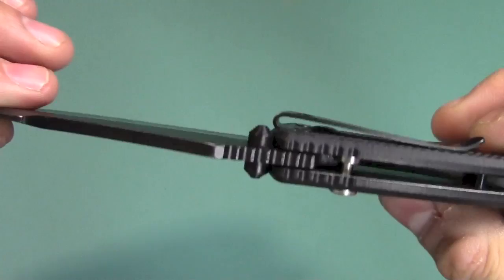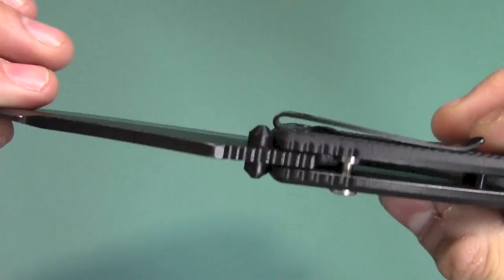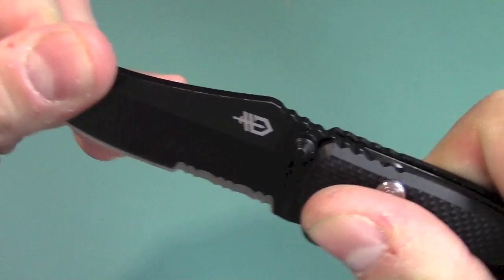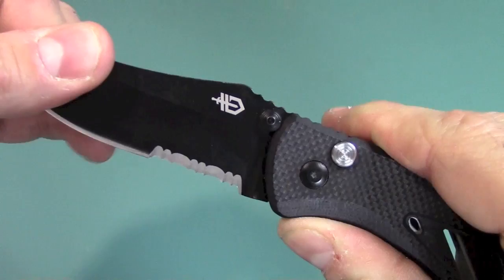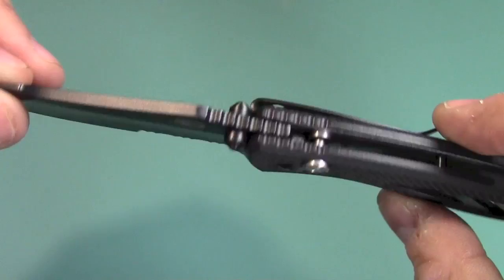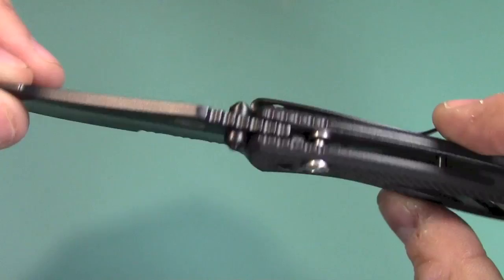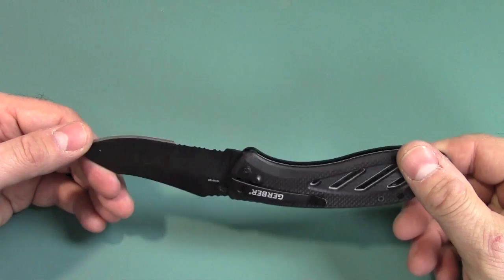Now, these type of locks tend to have some nasty traits to them. And one is they generally don't lock up perfect. And the up and down play on this one is barely there. I could feel it just a teeny bit, but it's barely there. And there is a little bit left, right, but the side to side can be adjusted out just tightening that pivot screw. Let's go ahead and go over all the other neat features about this knife.